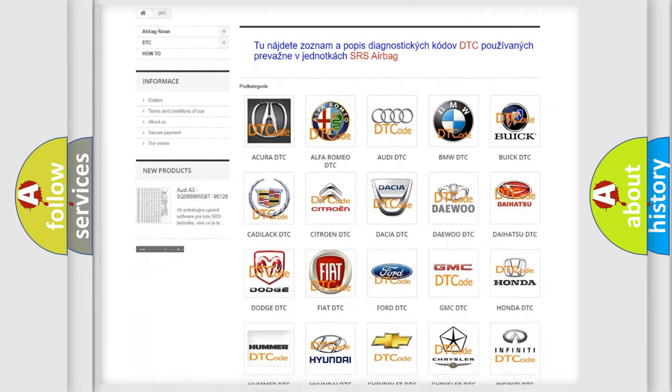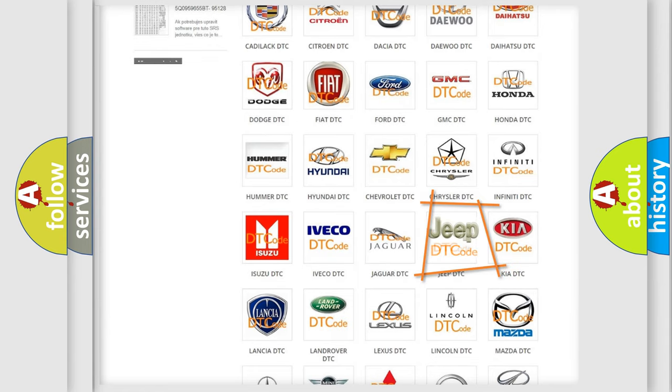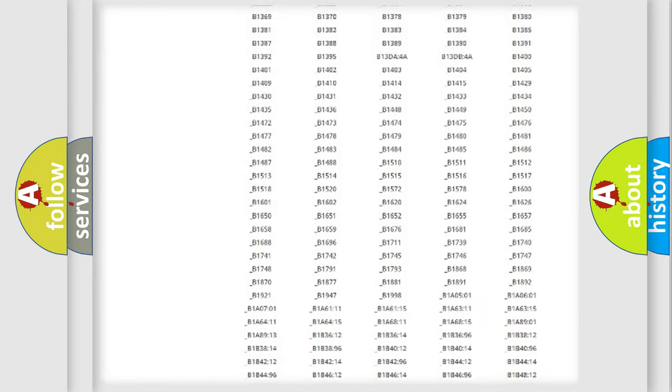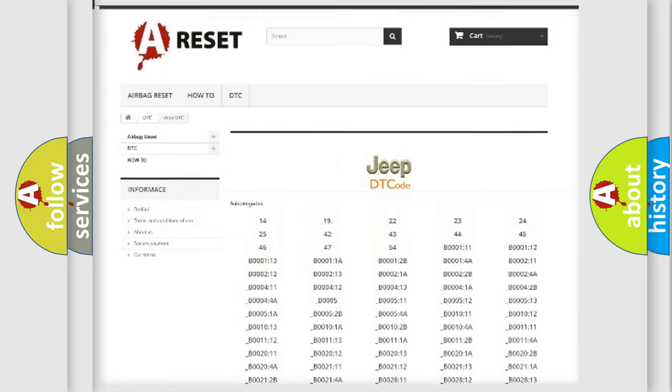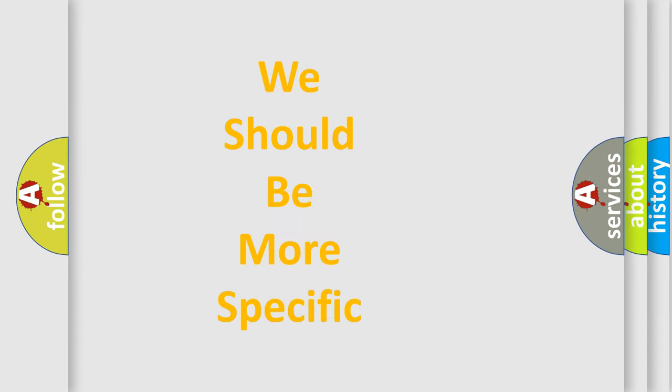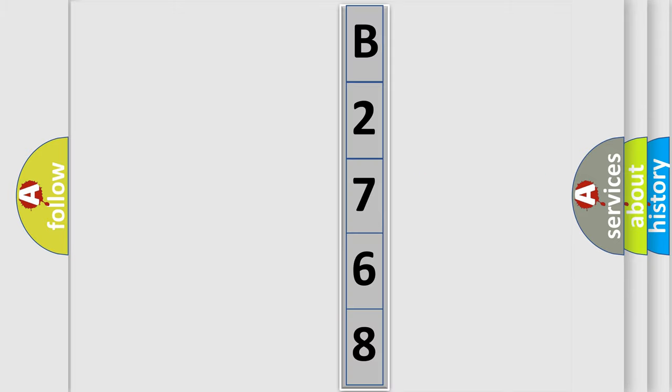Our website airbagreset.sk produces useful videos for you. You do not have to go through the OBD2 protocol anymore to know how to troubleshoot any car breakdown. You will find all the diagnostic codes that can be diagnosed in Jeep vehicles, and many other useful things. The following demonstration will help you look into the world of software for car control units.